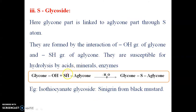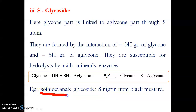Next is S-glycoside. Here the glycone has a hydroxyl group and the aglycone has a sulfhydryl (–SH) group, so glycone and aglycone are attached by a sulfur bond. This type of glycoside is known as isothiocyanate glycoside. The classical example is Sinigrin from black mustard.